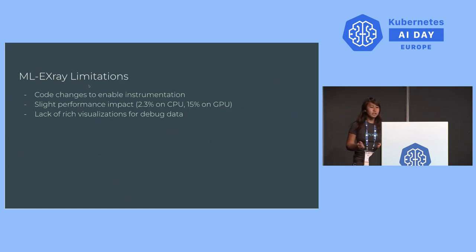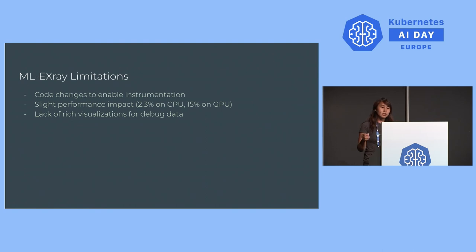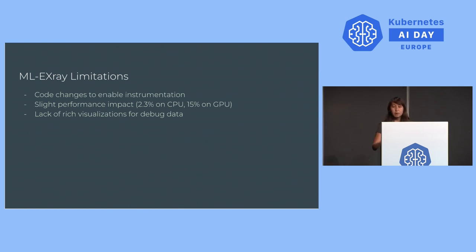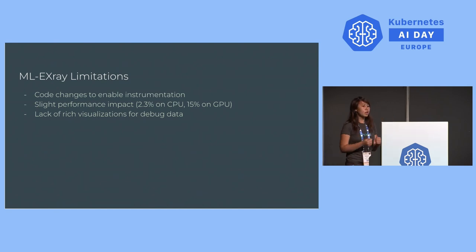ML X-Ray has some limitations. First, you need code changes to enable instrumentation on your debug pipeline, which can be annoying — you might deploy it and forget to add the line to invoke ML X-Ray. Generally in observability we like low-touch instrumentation. There's also a slight performance impact, more noticeable on GPU, plus a memory impact from writing tons of things to logs. And the Python API is somewhat limiting in how you can visualize the information, since it's not in a standard output format you can plug into any tool.